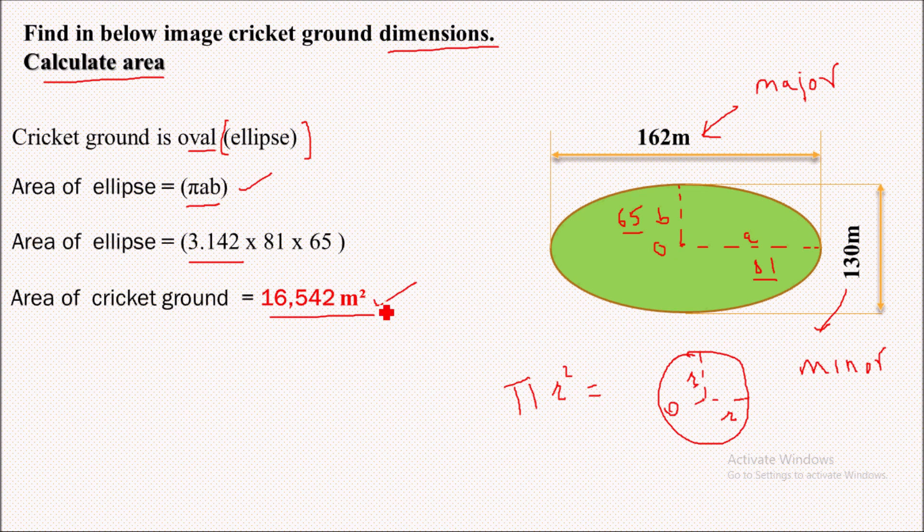So in this way we can calculate the area of cricket ground stadium which is oval, that means elliptical in shape. Hope you find this video useful and informative. Thank you for watching.